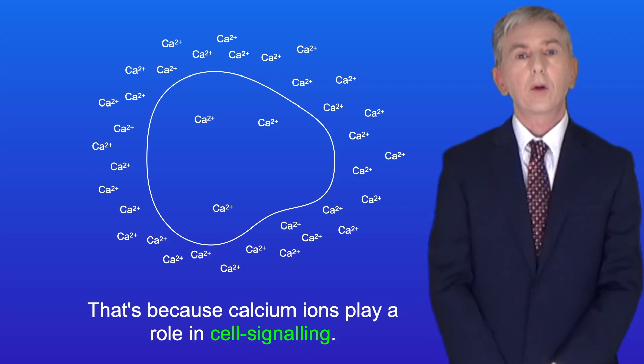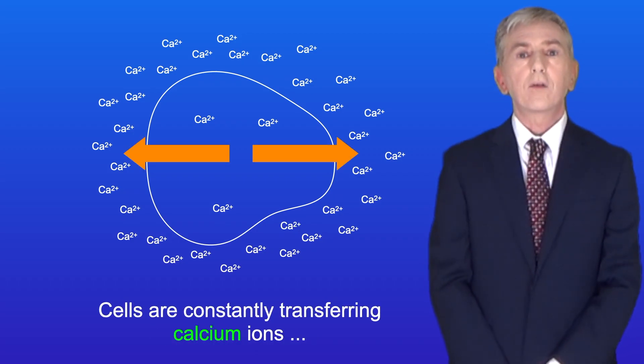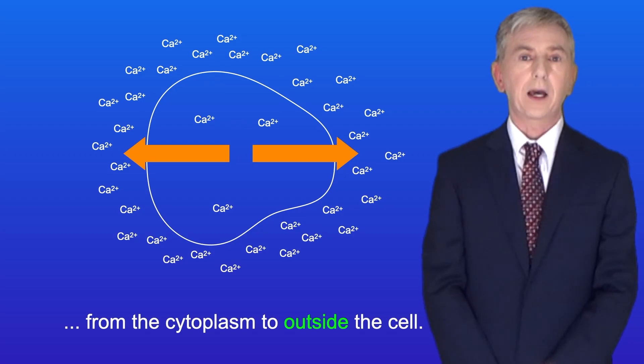That's because calcium ions play a role in cell signaling, and we'll see examples of that later in the course. So, those cells are constantly transferring calcium ions from the cytoplasm to outside the cell.